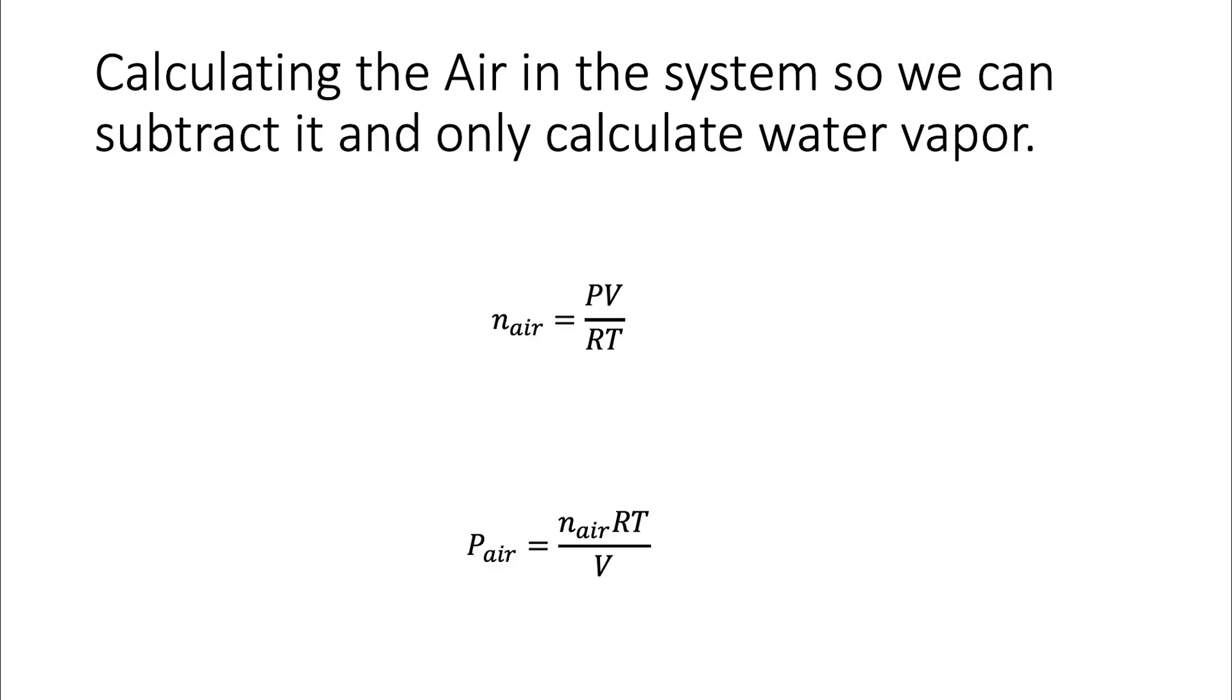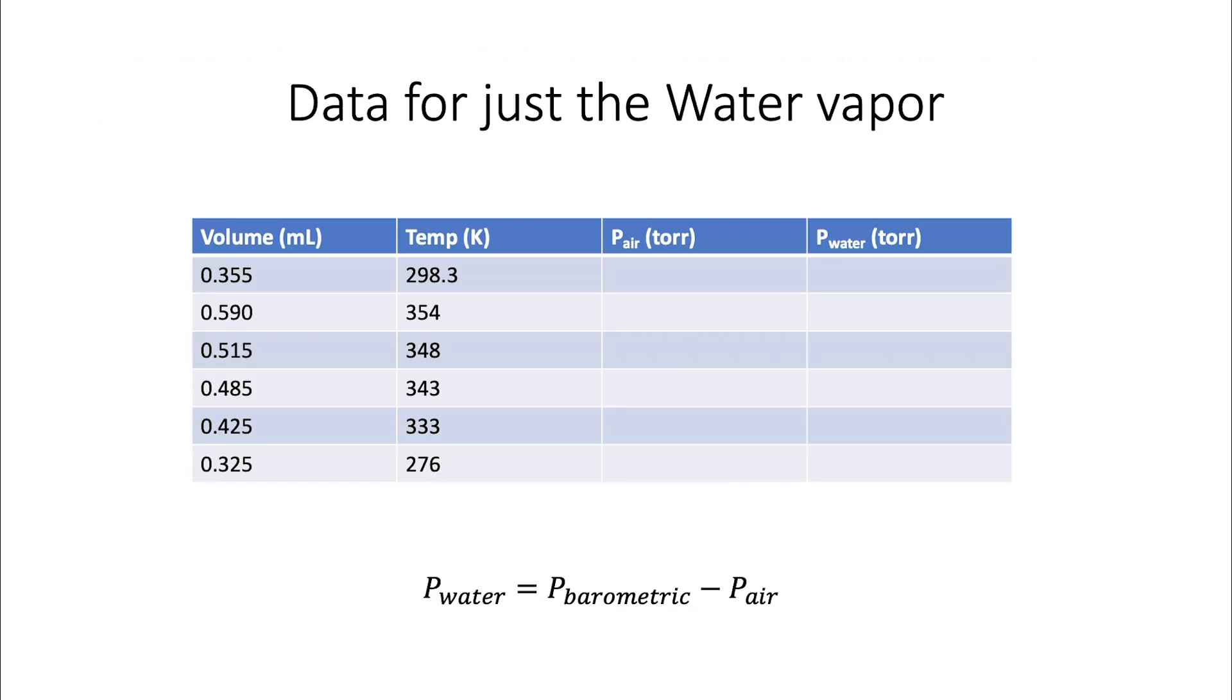Instead we have to figure out how much air is in there because we only want the vapor pressure, the water vapor to do this calculation. So first we have to calculate the air and we do that by using the values at zero degrees Celsius where there's no vapor pressure, water vapor, only air.